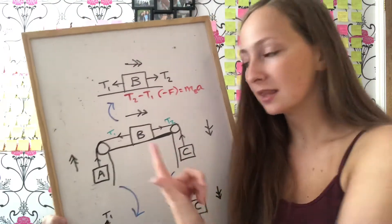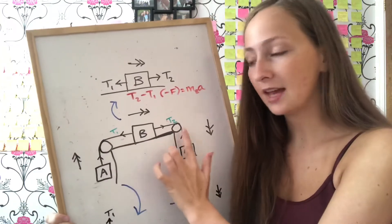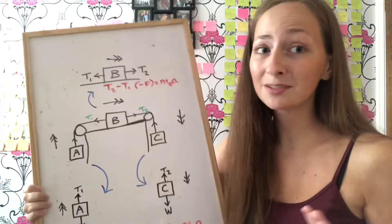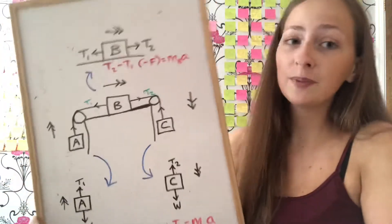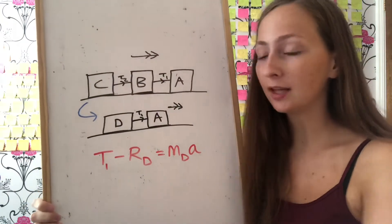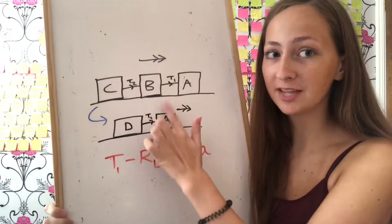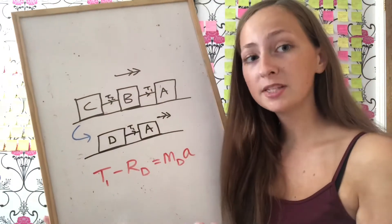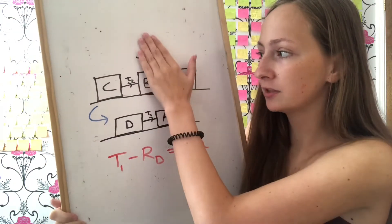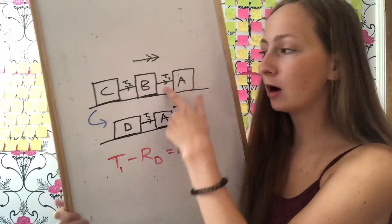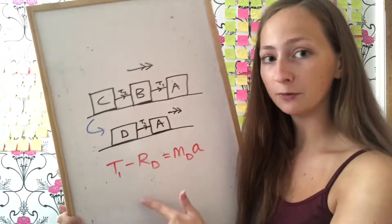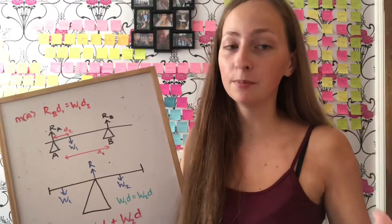There are two different ropes, therefore two different tensions. However, because the string is light and inextensible and the pulley is smooth, tension is the same on each side of a given pulley — both sides of the first pulley share T1, both sides of the second share T2. That's why assumptions are important. If you have more than one trailer, there are two different tensions, and to find a particular one you consider the appropriate subsystem as one particle.